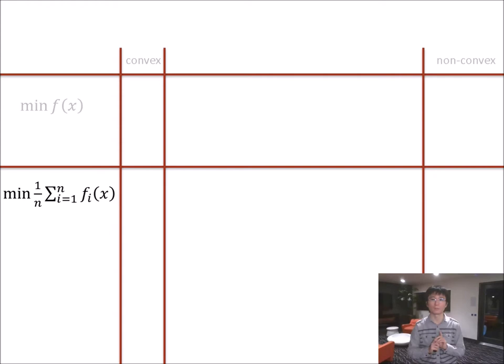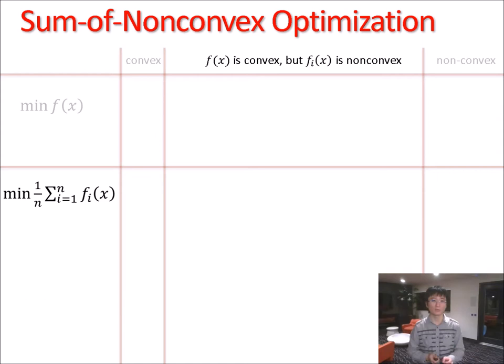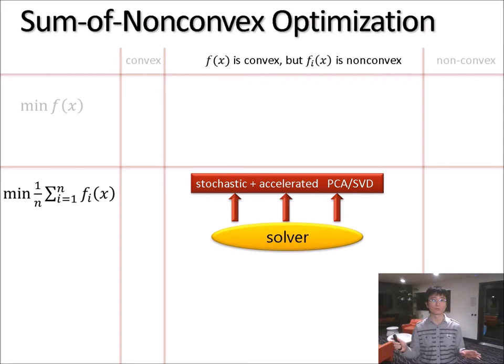In this talk, I want to share with you the story about a more complicated problem that sits in between. That is the case when the function f(x) is convex, but each f_i is non-convex. This is what people refer to as the sum of non-convex optimization.